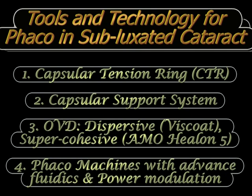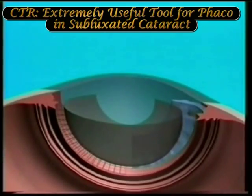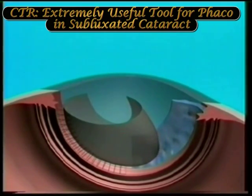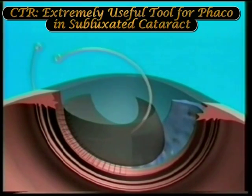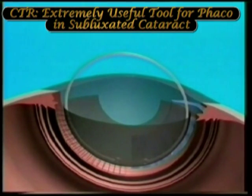With the availability of capsular tension rings, capsular support systems, improved ophthalmic viscoelastic devices, and phaco machines with advanced fluidics and power modulations, it is now possible to perform phacoemulsification in these challenging cases. As seen in this animation, the capsular tension ring is an extremely useful tool — the capsular bag is dislocated to one side, and placing a CTR pushes it against the zonules.